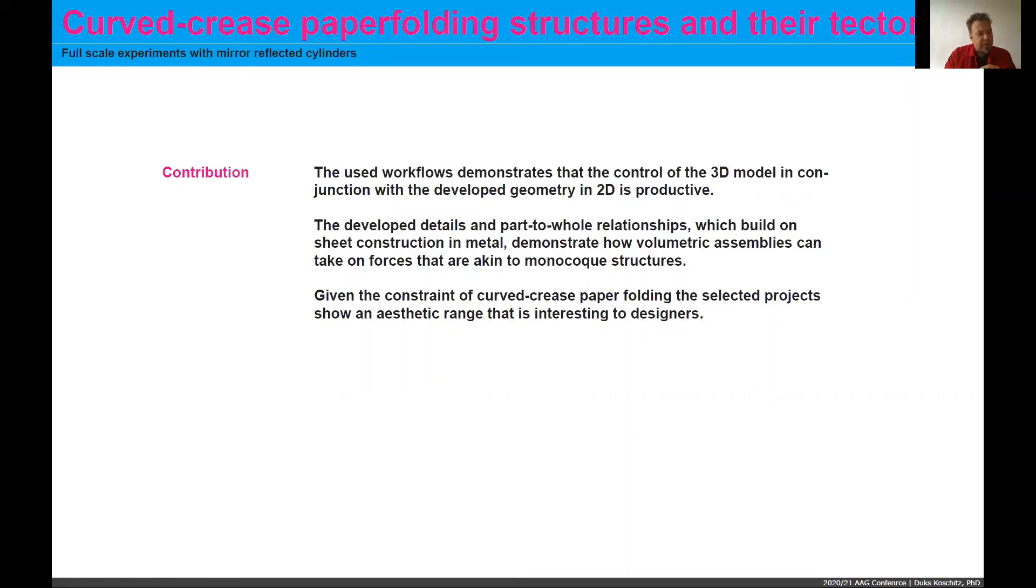The part-to-whole relationships and all the developed details do build on sheet construction in metal. But I think we were able to demonstrate how we can get to a volumetric assembly that I would argue should be called a monocoque structure, that we have not seen using curved creases in any other work, at least that we were able to find.